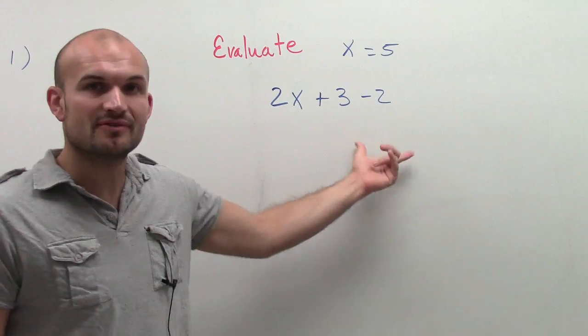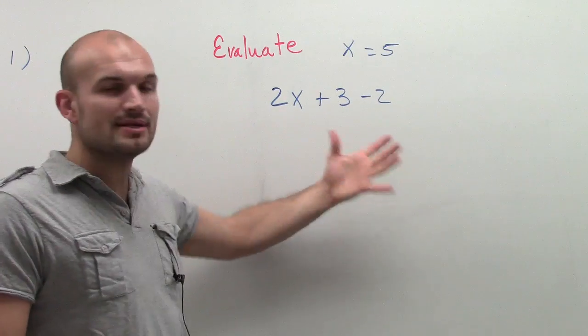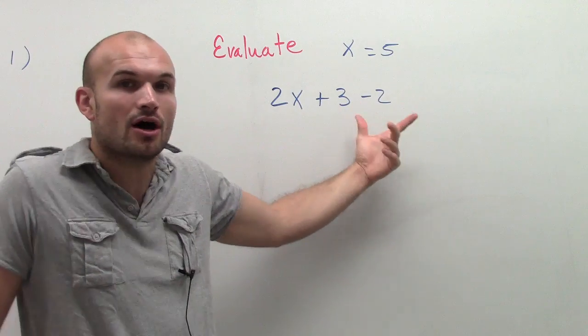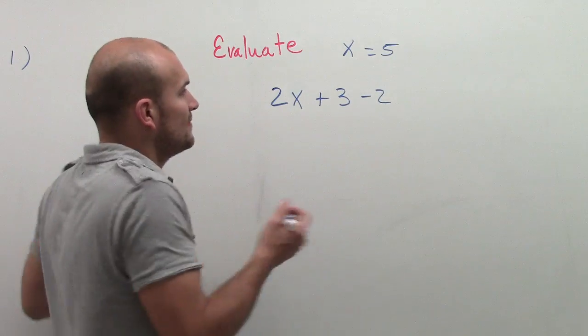Look, I can simplify these numbers right here. I don't need to wait to the end to do everything. Since I can already subtract these two numbers, that's what I'm going to do.